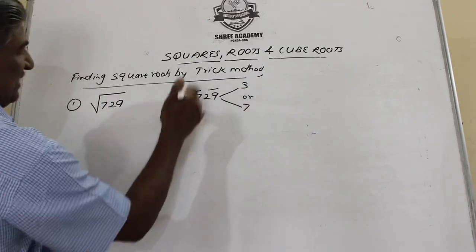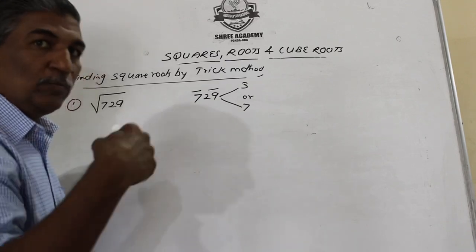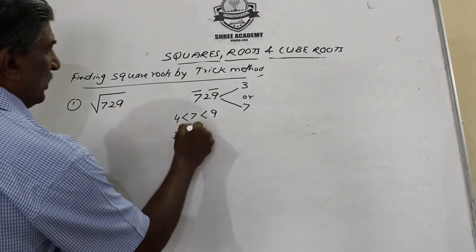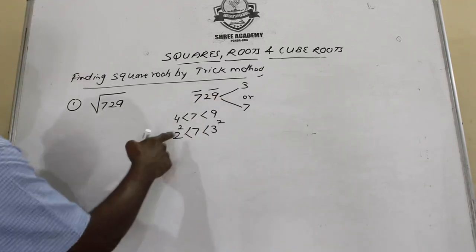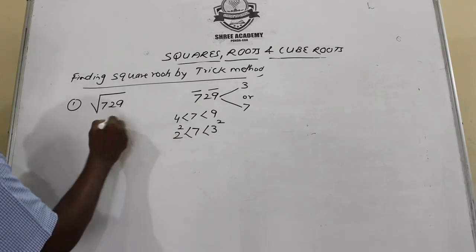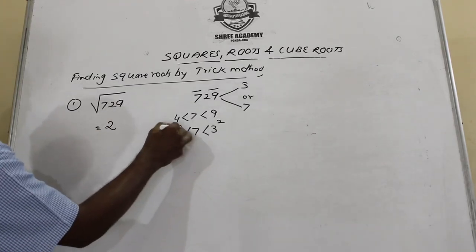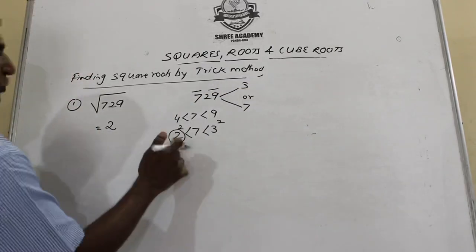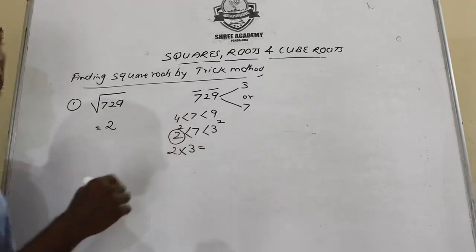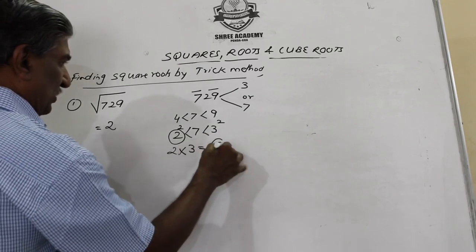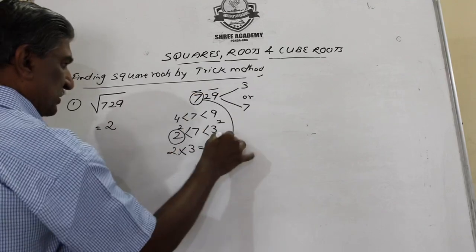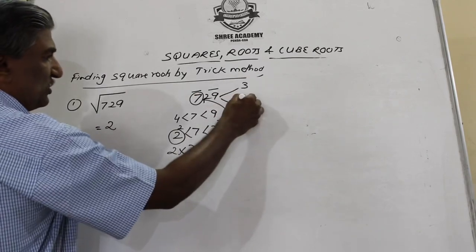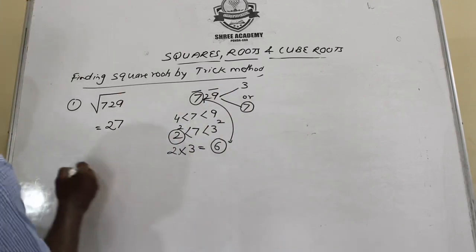Now take the remaining group, 7. Seven lies between two perfect squares: 4 (2²) and 9 (3²), so 2² < 7 < 3². We always take the lower option, so the tens digit is 2. To decide between 3 or 7 for the units digit, multiply 2 by its successor 3: 2×3 = 6. Compare 6 with 7 — since 7 is bigger, we take the bigger option, 7. So the answer is 27.